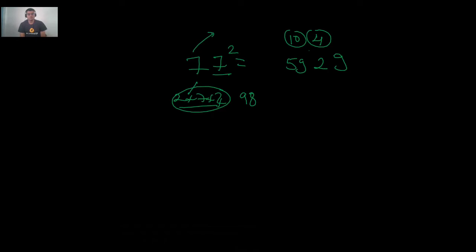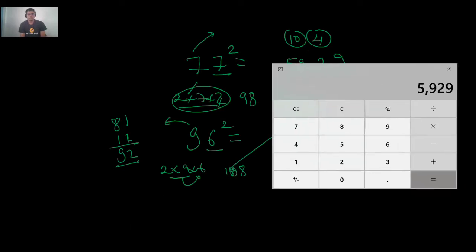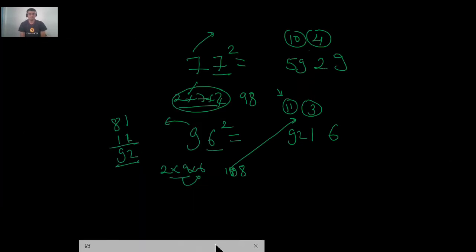Let us find 96². Step 1: 6² = 36; write 6, carry 3. Step 2: 2 × 9 × 6 = 108; add 3 to get 111; write 1, carry 11. Step 3: 9² = 81; add 11 to get 92. Result: 9216. Verification: 96 × 96 = 9216. Correct!